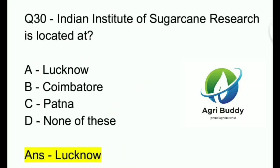Question 30. Indian Institute of Sugarcane Research is located at? A. Lucknow. B. Coimbatore. C. Patna. D. None of these. And the answer is Lucknow.